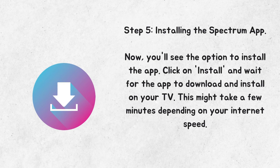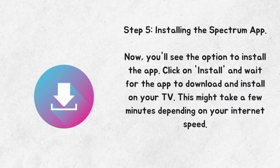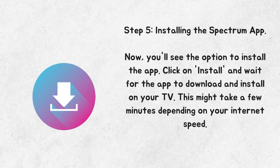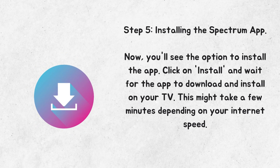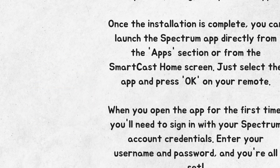Step 5: Installing the Spectrum app. Now you'll see the option to install the app. Click on Install and wait for the app to download and install on your TV. This might take a few minutes depending on your internet speed.